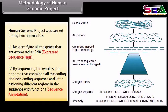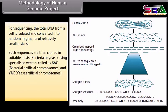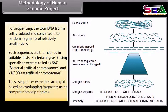For sequence annotation, the total DNA from a cell is isolated and converted into random fragments of relatively smaller sizes. Such sequences are then cloned in suitable hosts — bacteria or yeast — using specialized vectors called BAC (bacterial artificial chromosomes) and YAC (yeast artificial chromosomes). These sequences were then arranged based on overlapping fragments using computer-based programs.